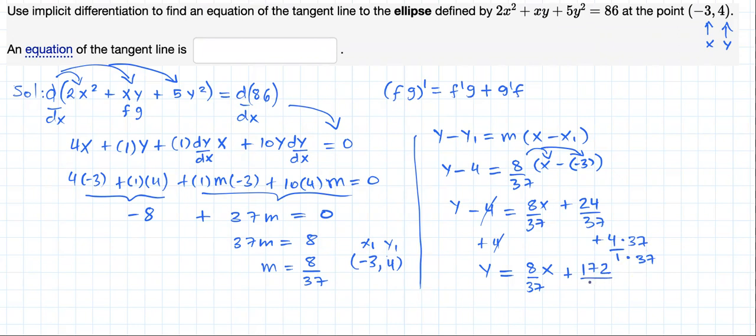With 37 as the common denominator, the equation of the tangent line at the point (-3, 4) is y = (8x + 172)/37. Thank you very much.